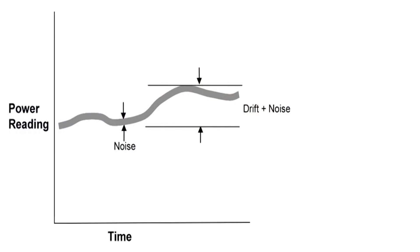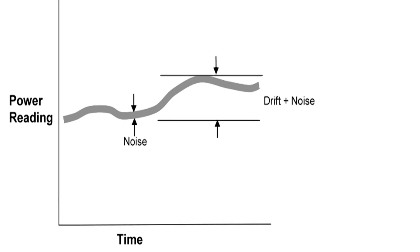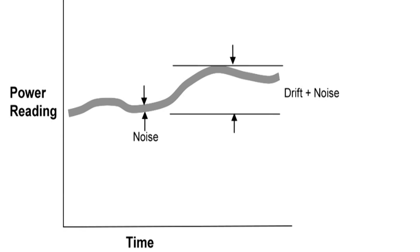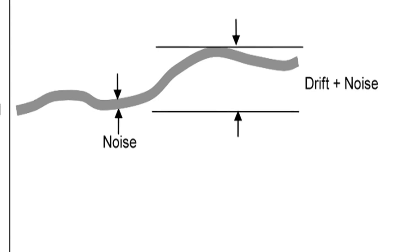This brings us to the next question where we give a spec in Ophir called the minimum measurable power. What does that mean in our case?